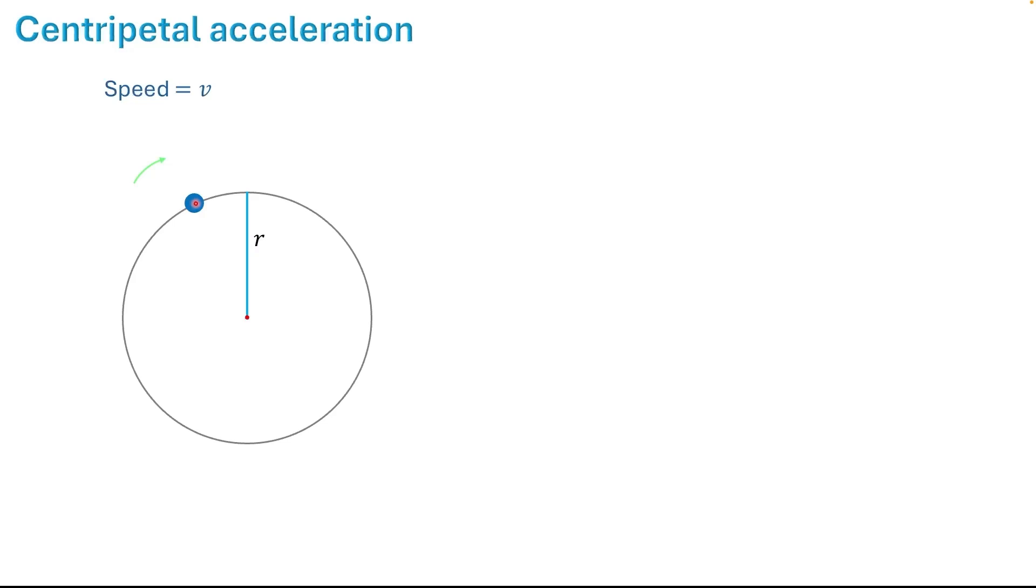I am taking two positions of the object. This is one position and this is the other. And these two angles are the same. I take these angles as theta. The time it takes for the object to travel from here to here is the time interval delta t.